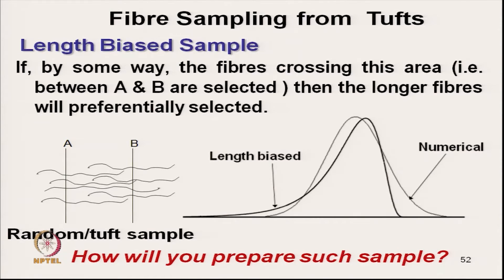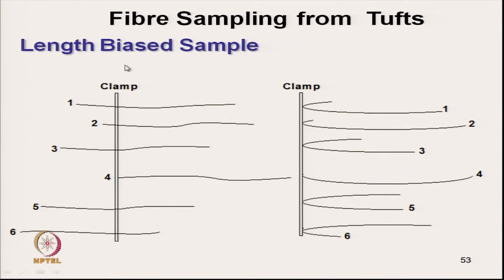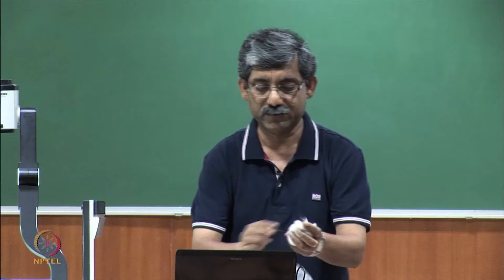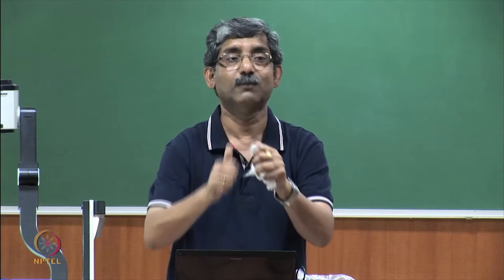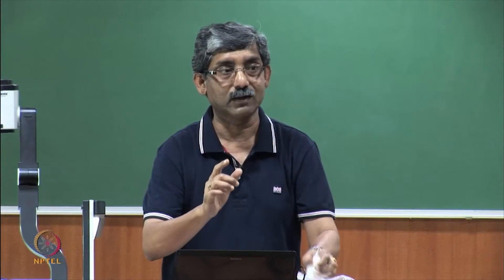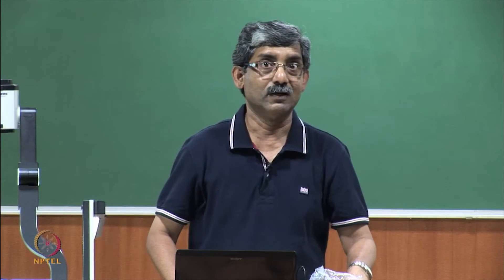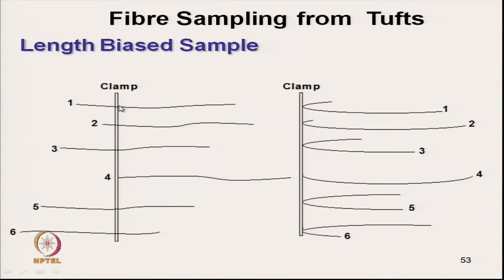How to prepare the length-biased sample? The most common example is the fibrosampler used in the high volume instrument. This is the clamp where, from the surface of the fibre bulk, if we try to pick the fibre from the surface, the sample is length-biased because the probability of a longer fibre is always greater to get selected. After clamping, the fibres get folded: fibre 1 forms like this, fibre 2 forms like this, fibre 3, and fibre 4 has been clamped at the end point.